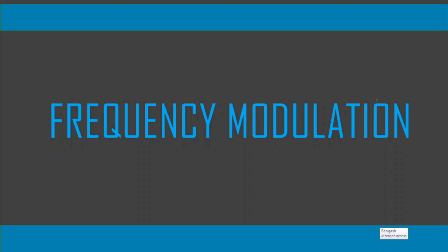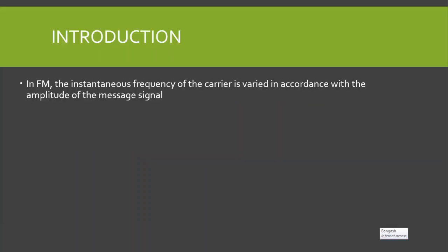In the previous lecture I gave you a brief overview of frequency modulation. In this lecture we are going to discuss this topic in greater detail. In frequency modulation, the instantaneous frequency of the carrier wave is varied in accordance with the amplitude of the message signal.